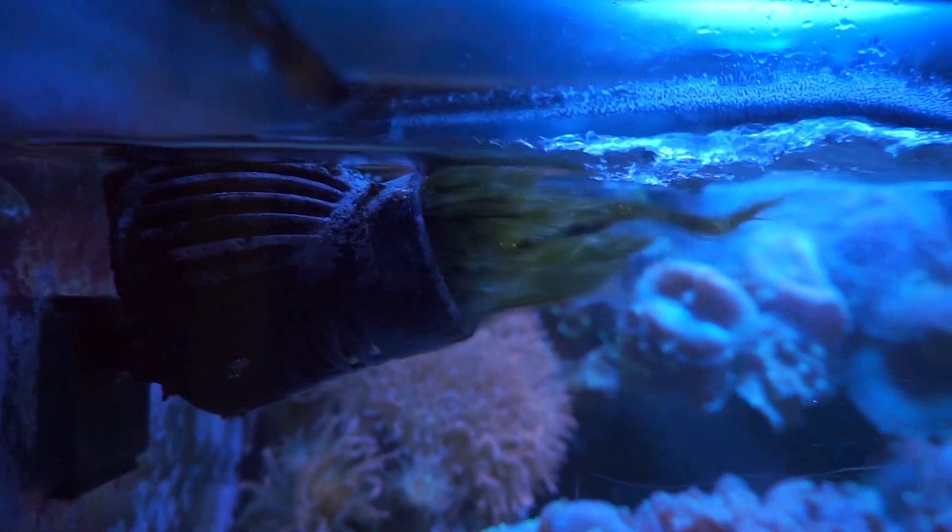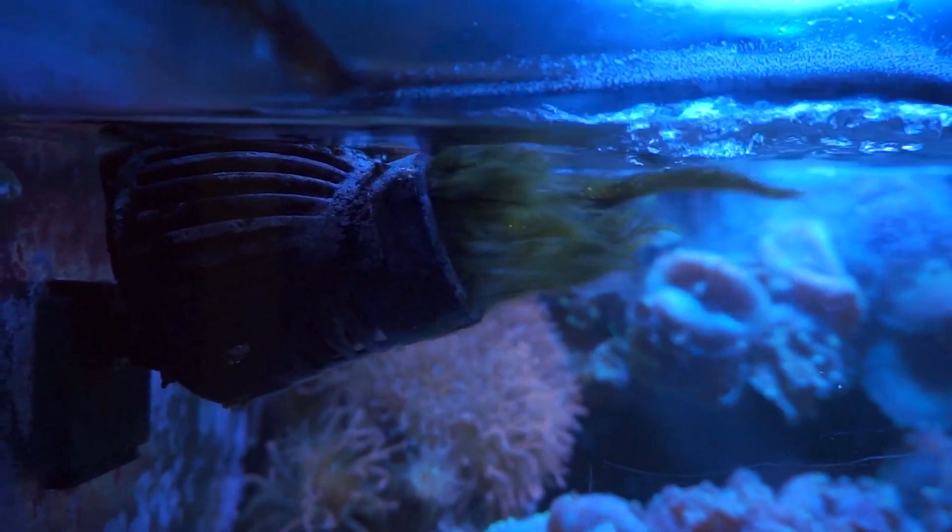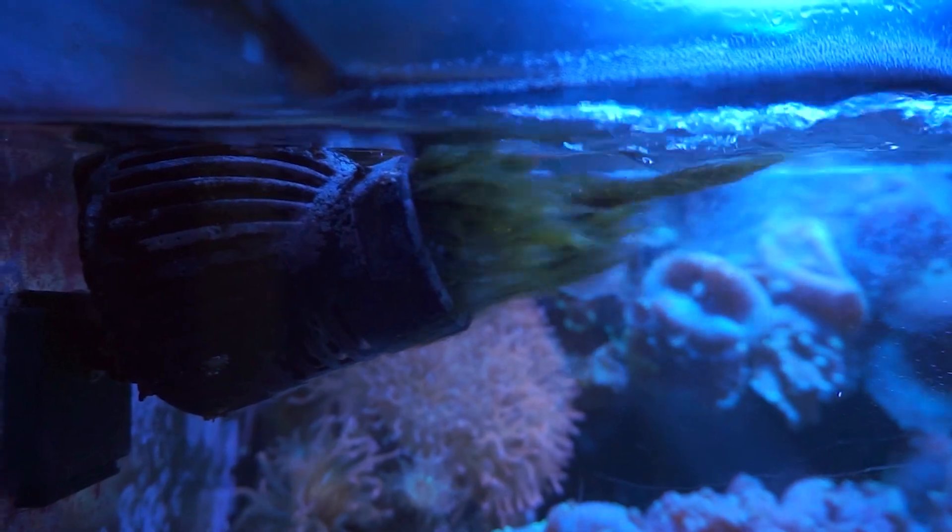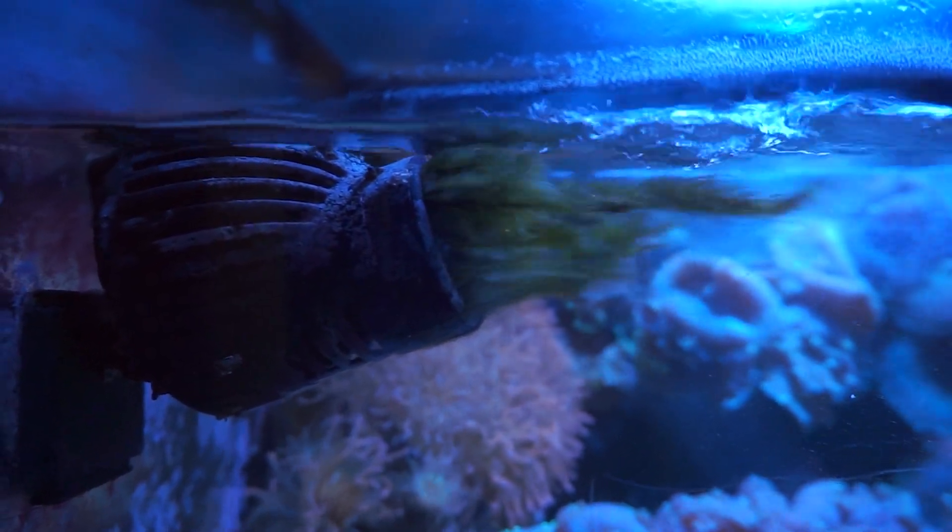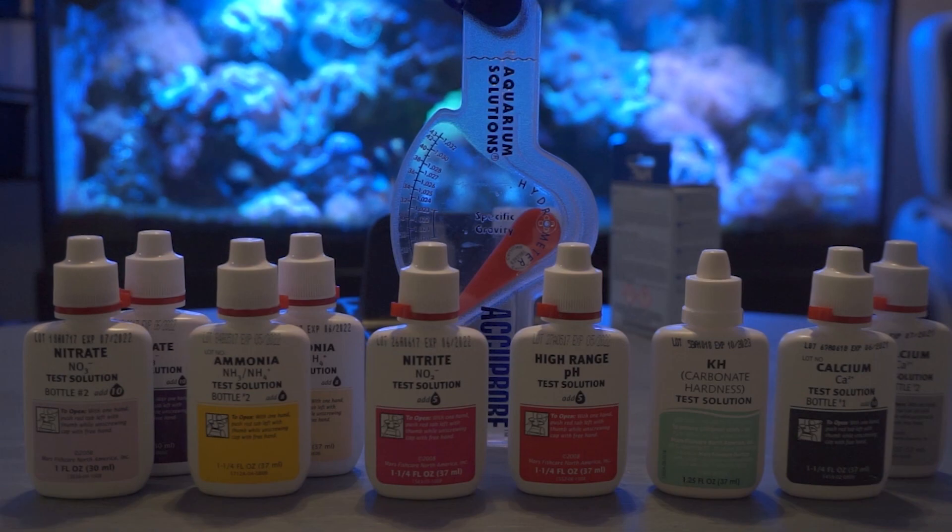Today we're actually going to be looking at the API master test kit which comes with our four main ones. We're going to have the ammonia test, the nitrate test, the nitrites, high range pH, and then also not included in the kit but bought separately we're going to test our calcium and our KH.